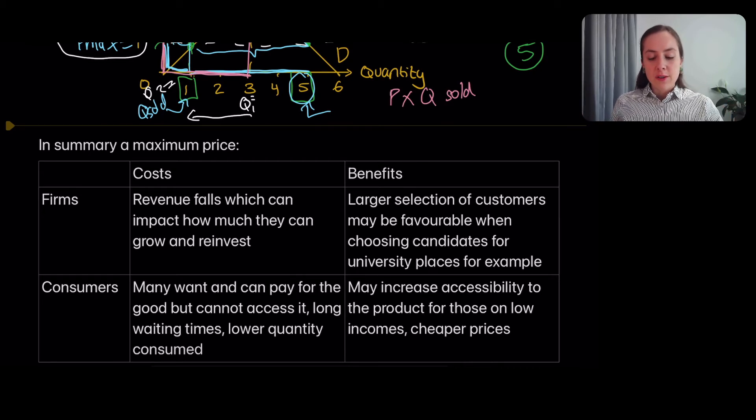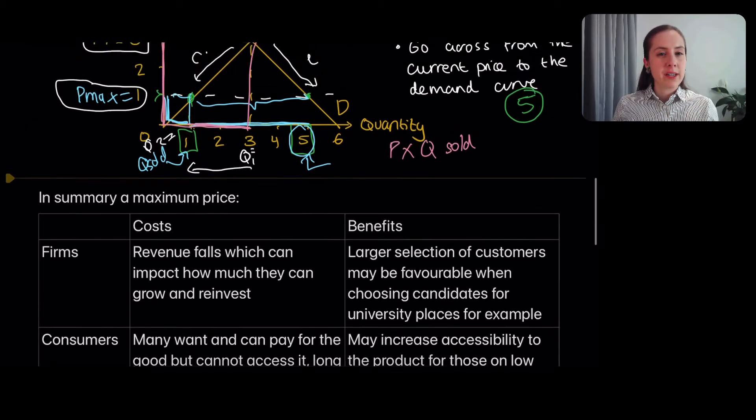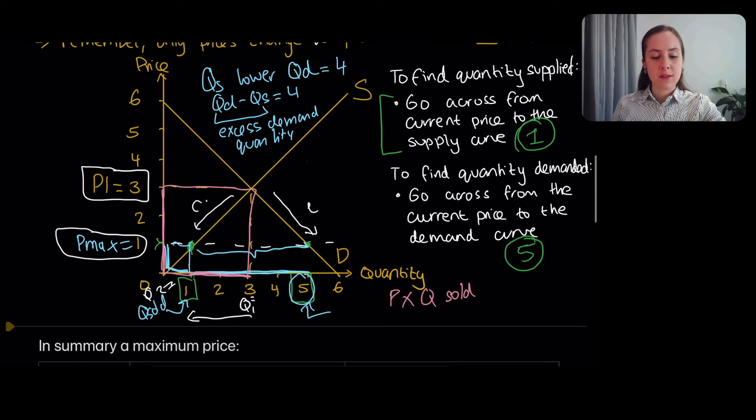A benefit to a consumer may be for the people who definitely couldn't afford it at price three. So there's some people here. For the people who definitely were not able or willing to pay three, so these are units four and five, for these people, they would have not had a chance of buying the good at three.